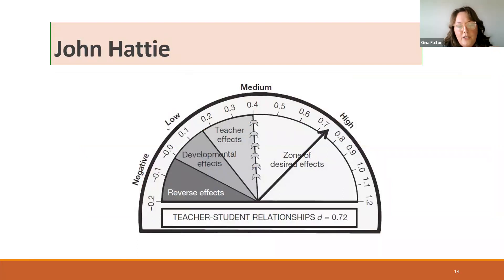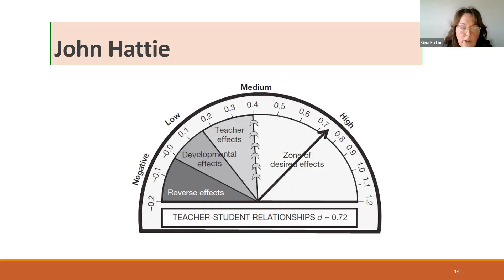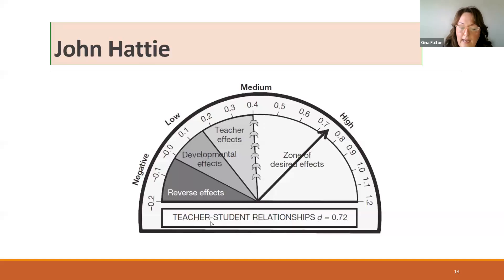In Hattie's work, you'll always see this — it looks like a protractor or a little half moon. When we go into it, Hattie goes into each of these things with effect sizes. So for effect sizes, which might be new for some folks — it goes from negative two, a reverse effect, all the way over to 1.2. Anything 0.4 and over is a good effect. In this example, teacher-student relationships has a positive effect size of 0.72. Having meaningful relationships with students has a huge effect on student learning.